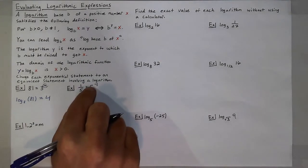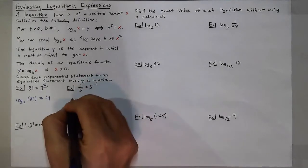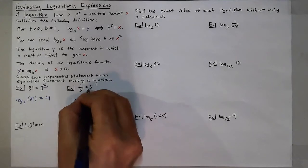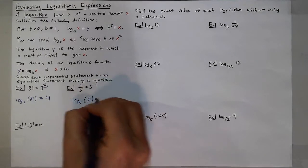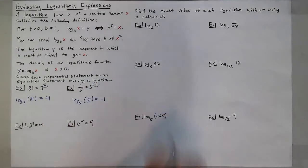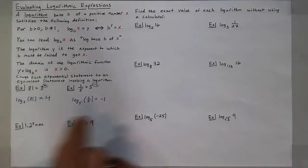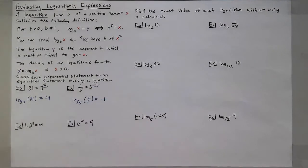If I had 1/5 is equal to 5 to the negative 1, again, that's a true statement. That would be read as log base 5 of 1/5 is equal to negative 1 because the log is the exponent. 5 to that negative 1 power gives me that 1/5 within the logarithm.